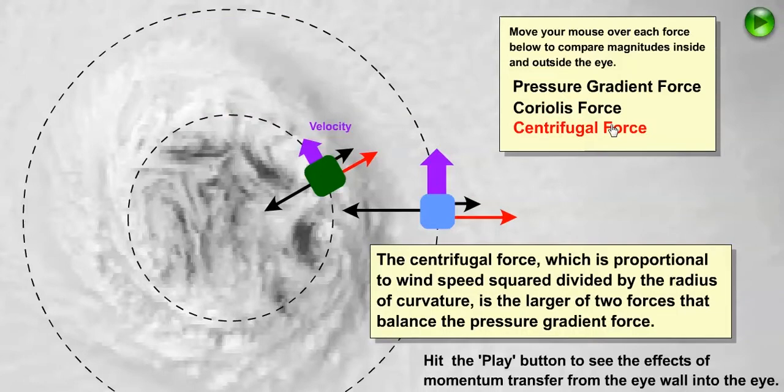Finally, we have the centrifugal force, which is the larger of the two forces that balance the pressure gradient force. The centrifugal force is proportional to the wind speed squared divided by the radius of curvature.